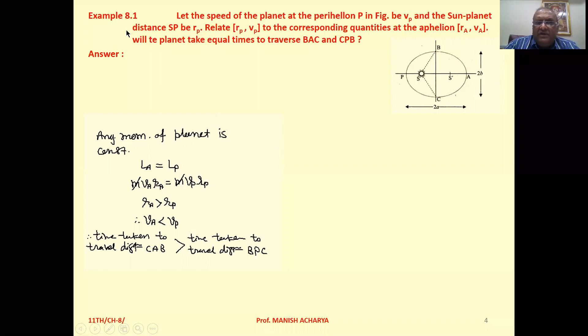Example 8.1: Let the speed of the planet at the perihelion P in figure and the Sun-planet distance SP be RP. Relate RP and VP to the corresponding quantities at aphelion RA and VA. Will the planet take equal time to traverse BAC and CPB?